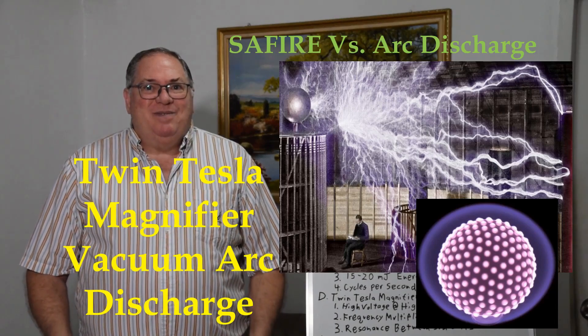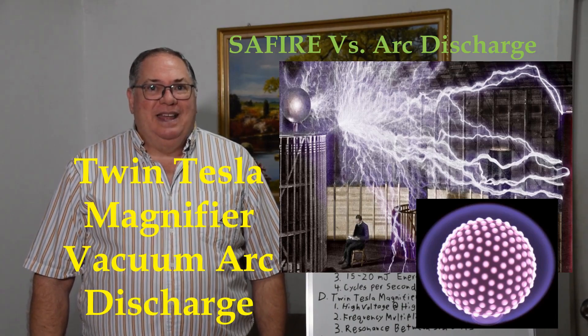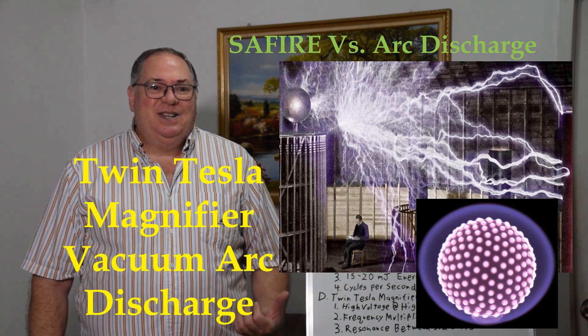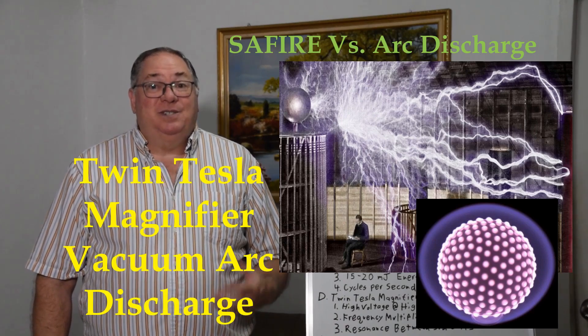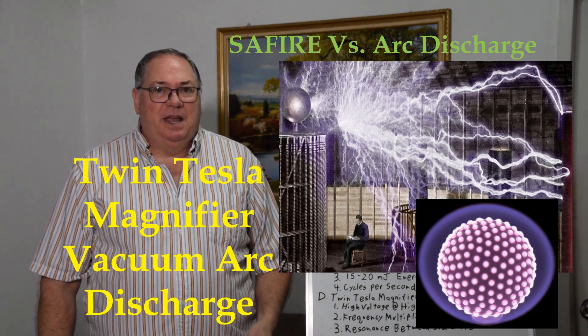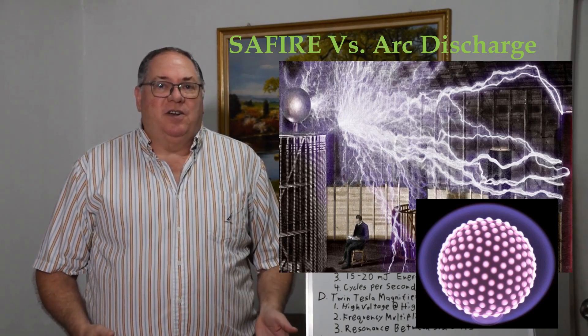After my video on the Sapphire project, I wanted to do a follow-up and talk about twin Tesla magnifier vacuum arc discharge versus the Sapphire approach, because I made the claim that vacuum arc discharge is going to do a better job at producing fusion and energy and remediation.